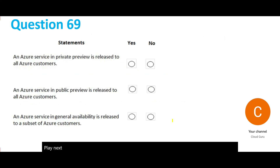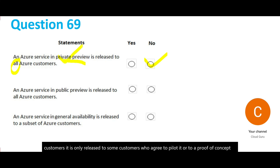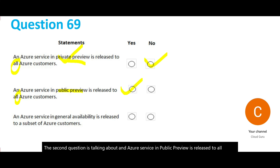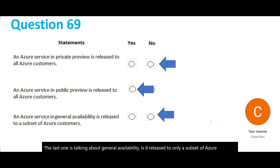The next question is about Azure service previews. The first part asks whether a private preview is released to all customers — no, it is only released to some customers who agree to pilot it or do a proof of concept. The second asks whether a public preview is released to all customers — yes, because they have gone public and all customers and users can use the service. The last part asks whether general availability is released to only a subset of customers — no, general availability is released to all customers.